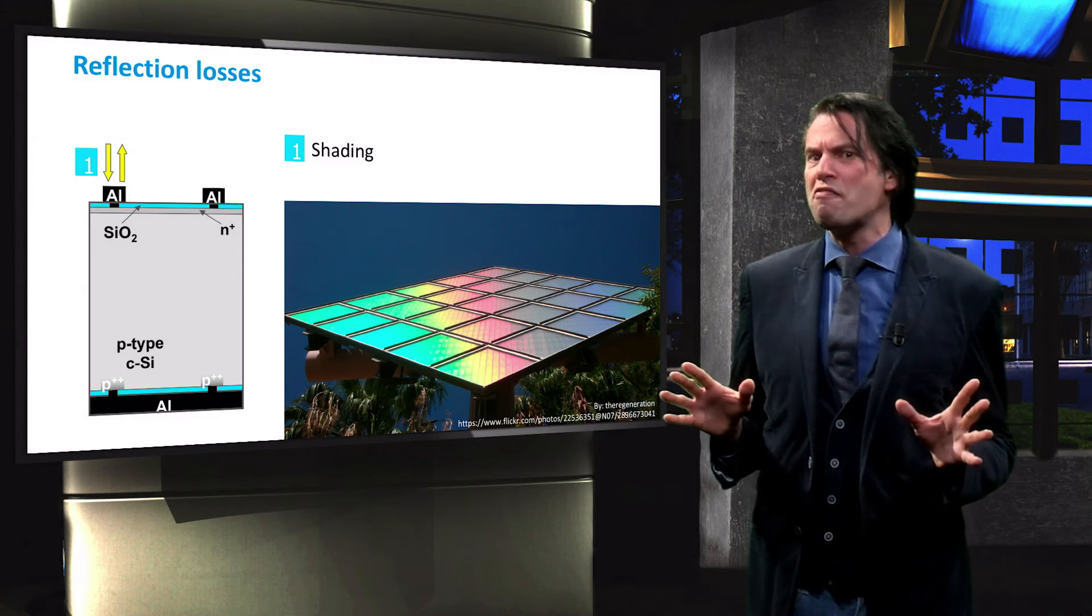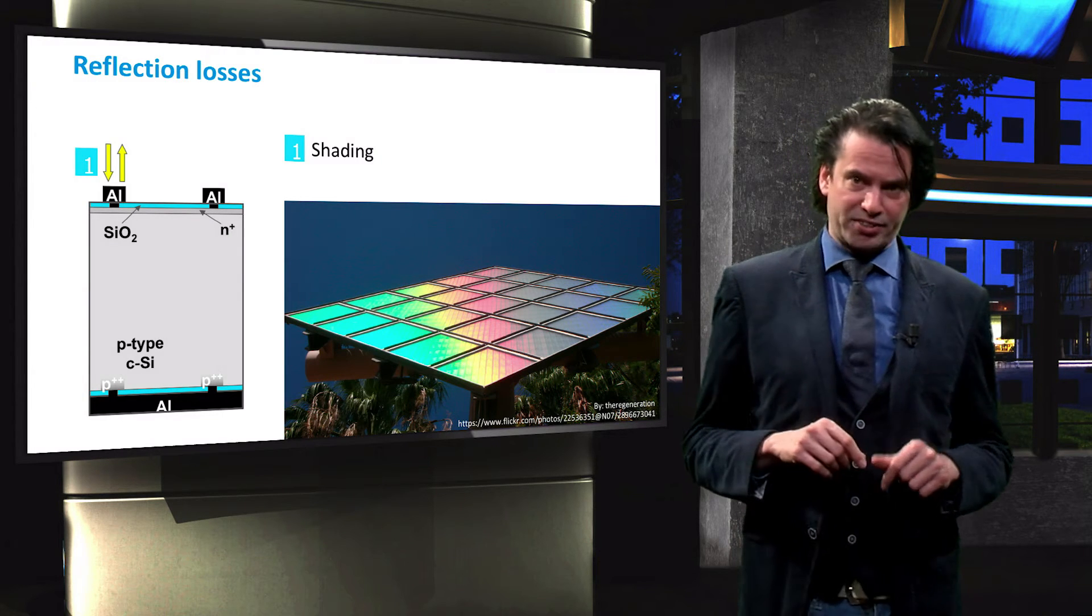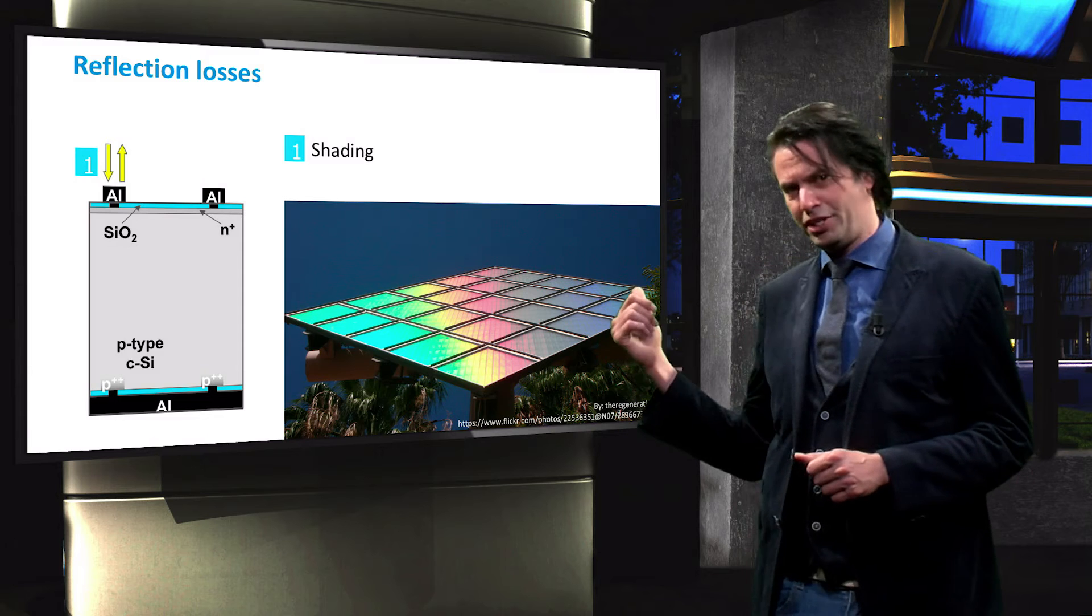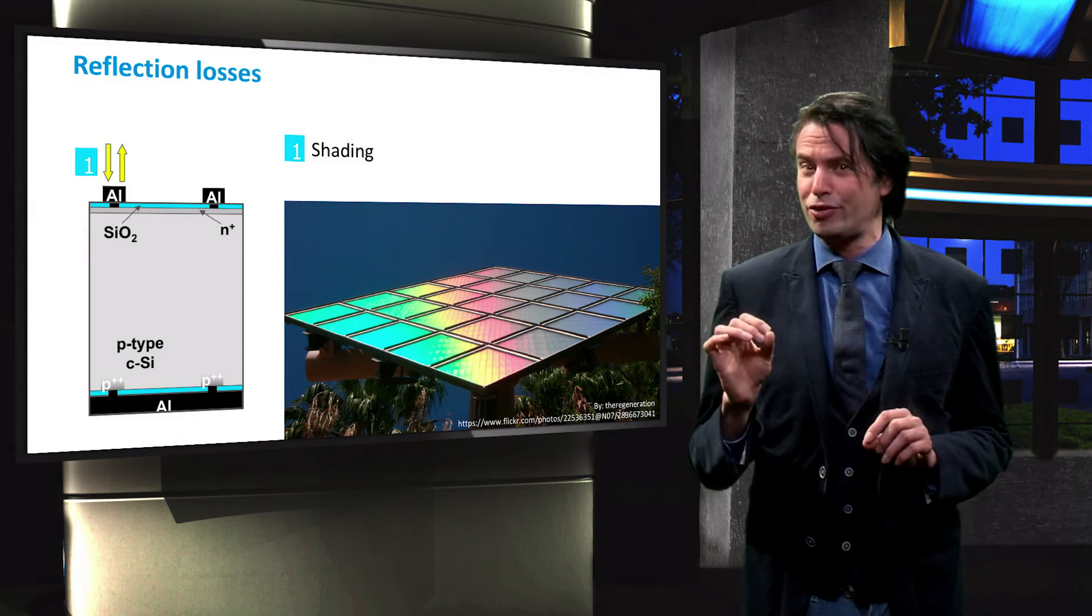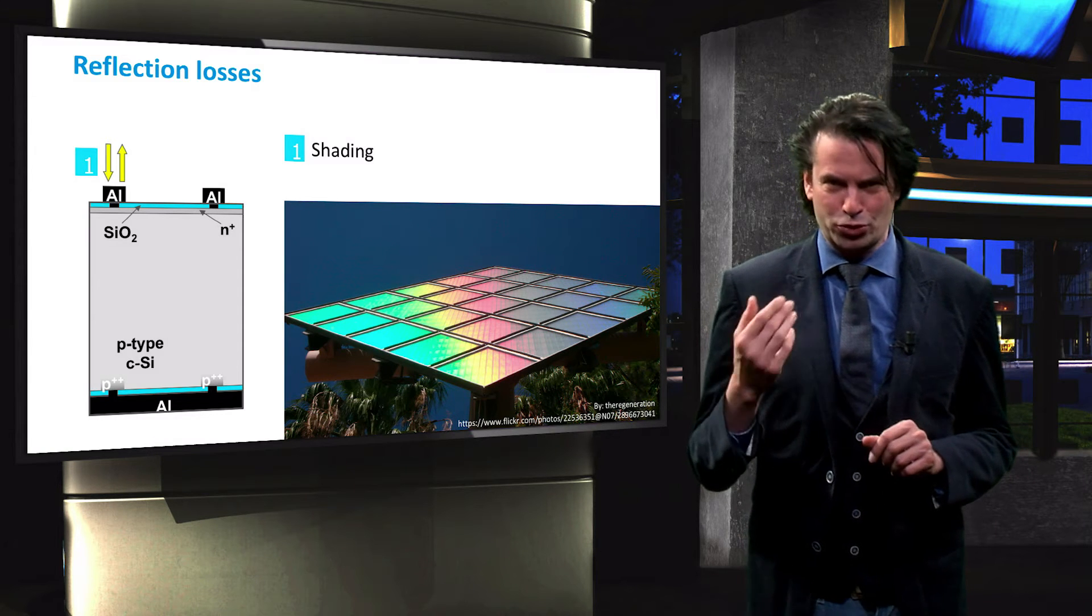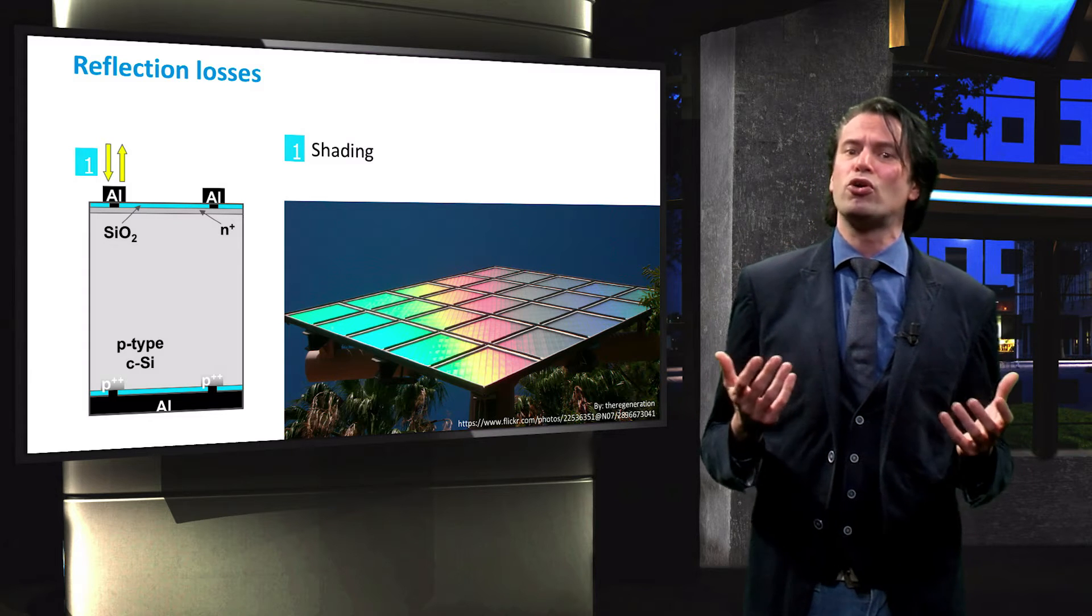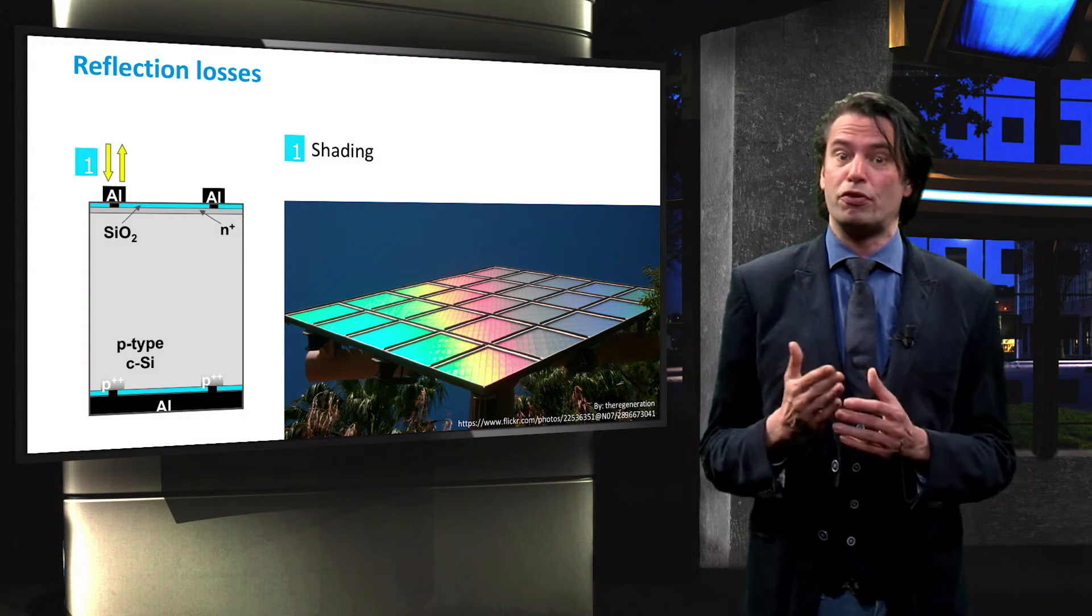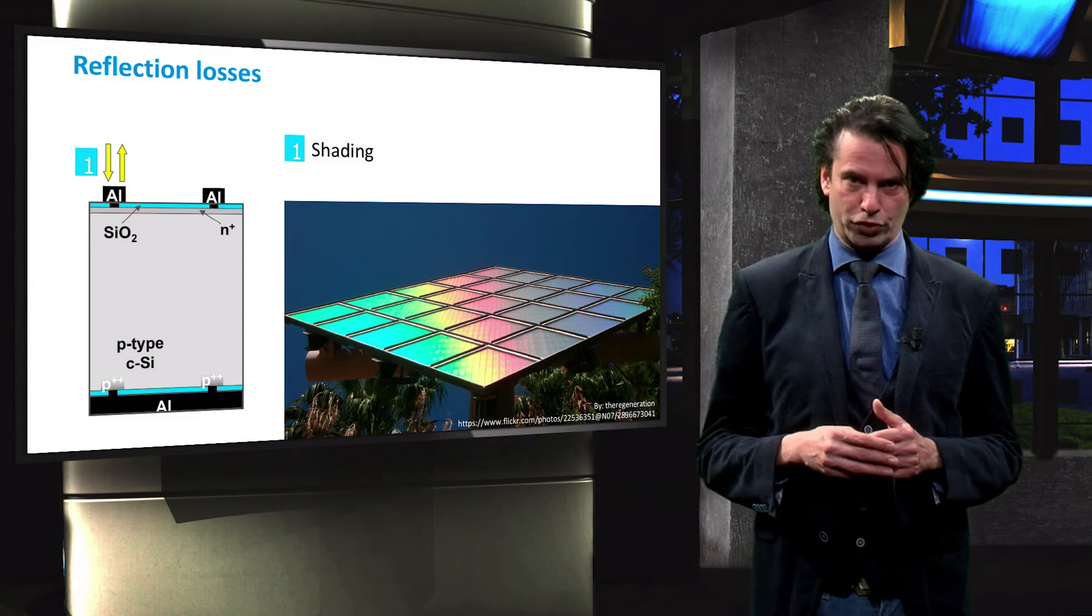The metal grid is not the only factor that prevents light from entering the solar cell. This picture shows some colorful solar cells. We can observe these colors because a full spectrum of photons is reflected off the solar module surface.